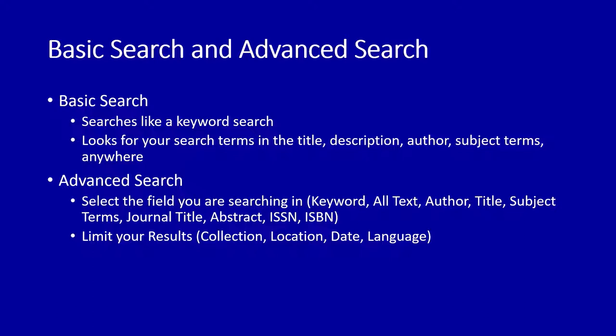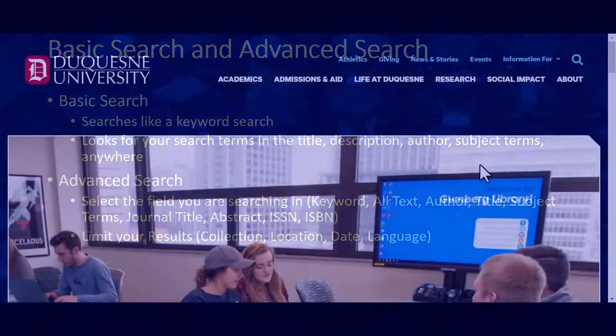The basic search can be found on the Gumberg Library homepage, and this search allows you to search only by keyword. This will be a general search that will look through all types of materials that contain the word you search somewhere in the title, author, description, subjects, and more.